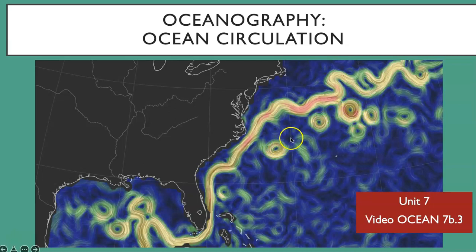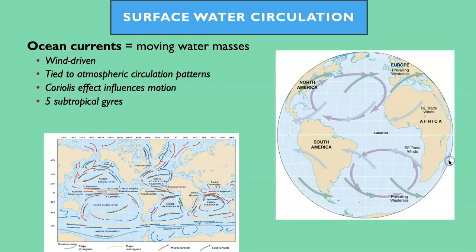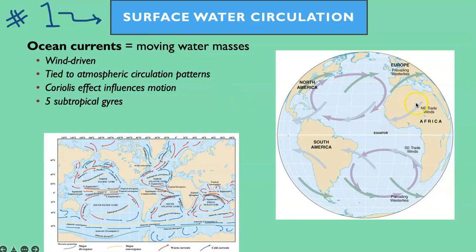We're going to talk about two kinds of ocean circulation. The first one is surface water circulation. Surface currents are driven by the wind — a current is a moving mass of water. Over here on the right, we have a picture showing the northeast trade winds in light purple and the westerlies in green. In the North Atlantic, the darker purple shows the movement of the water at the surface, driven by the wind. Because of the way that the Coriolis effect creates the winds in the northern hemisphere, water in the northern hemisphere in ocean basins tends to move clockwise in what's called a gyre.